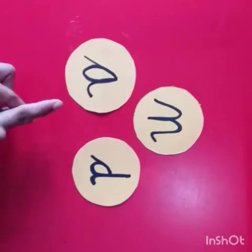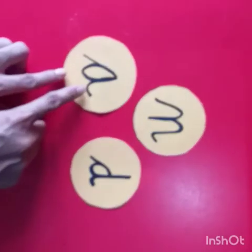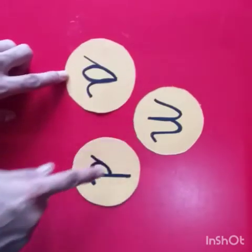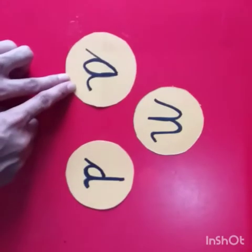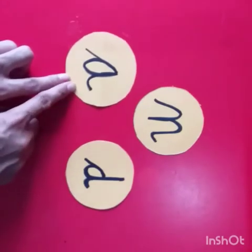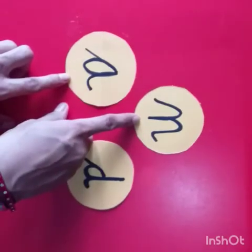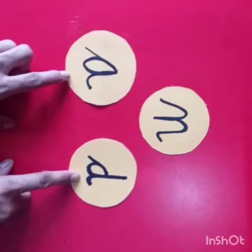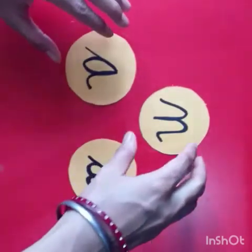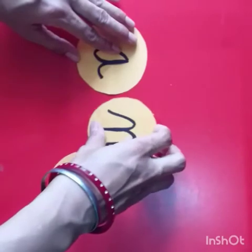We have three alphabets. One, two, three. This is A. This one, N. D. Now, we join together like this.